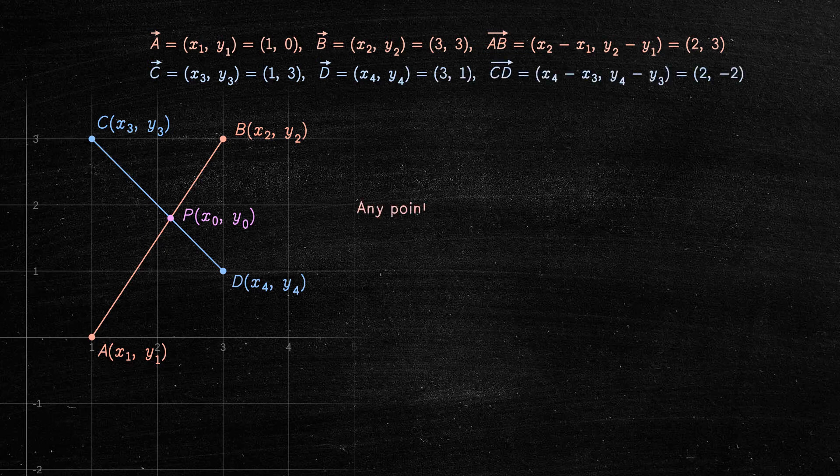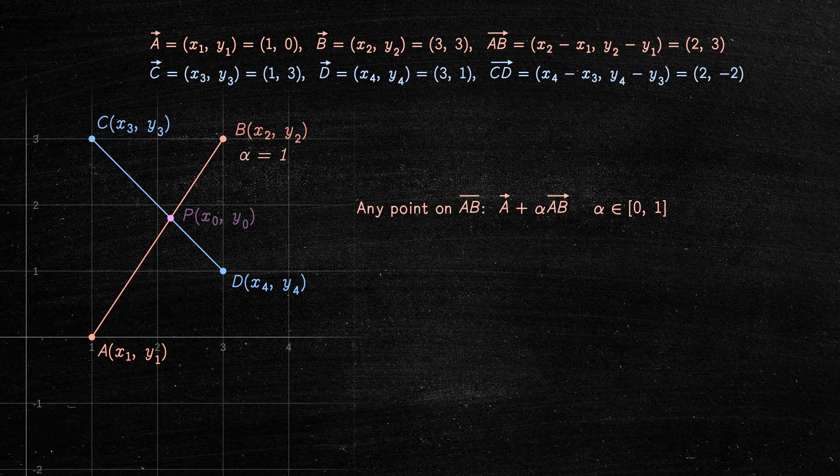Any point on the line segment AB can be represented as follows, where alpha is a real number between 0 and 1. For example, if alpha is 0, it gives us the point A. If alpha is 1, it gives us the point B. If alpha is 0.5, it gives us the midpoint of the segment AB, and so on.